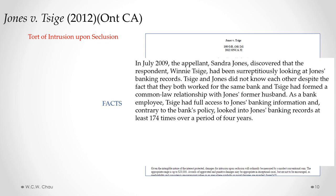Both of them worked at Bank of Montreal. Winnie had surreptitiously looked at Sandra's banking records because Winnie, as part of her job, had access to these records. Sandra and Winnie didn't know each other, but Winnie did know that Sandra was now living with her former husband. So Winnie was curious about Sandra's financial situation, and she used her access as an employee to look at Sandra's banking records at least 174 times over a period of four years.